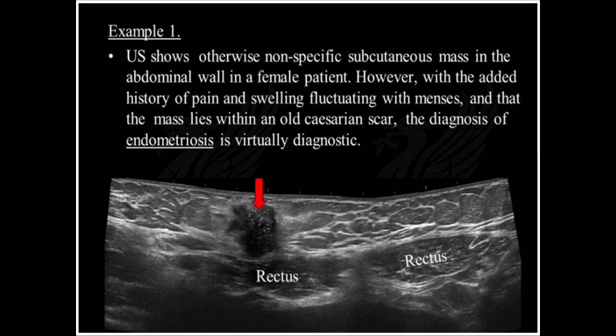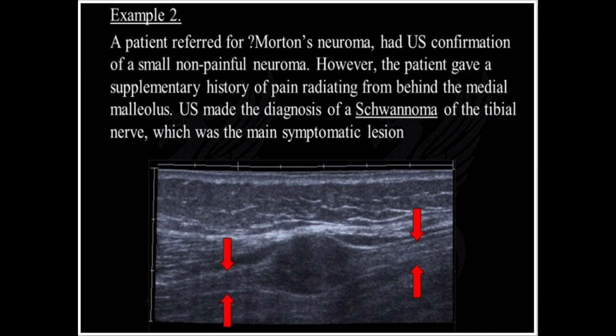Example 2: A patient referred for Morton's neuroma had ultrasound confirmation of a small non-painful neuroma. However, the patient gave a supplementary history of pain radiating from behind the medial malleolus. Ultrasound made the diagnosis of a schwannoma of the tibial nerve, which was the main symptomatic lesion.